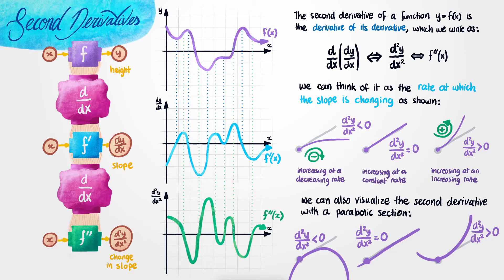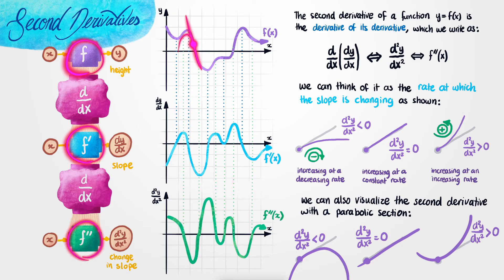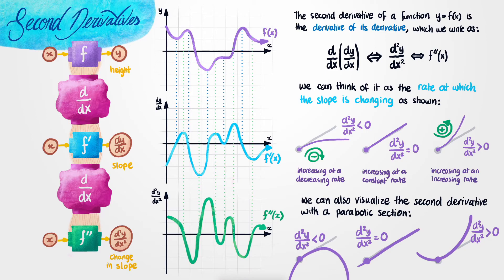This brings us to an interesting point. If for some function we only know the original function value, then we only know the height of the function. But if we know the first derivative, we kind of have the line of best fit. If, however, we have the second derivative as well, we sort of have the parabola of best fit as well. This is something I'm going to discuss much further in a future lesson.